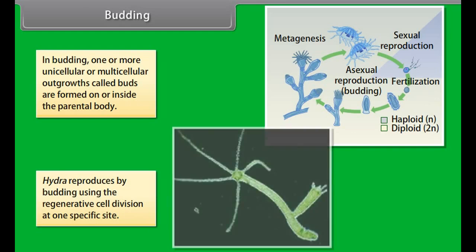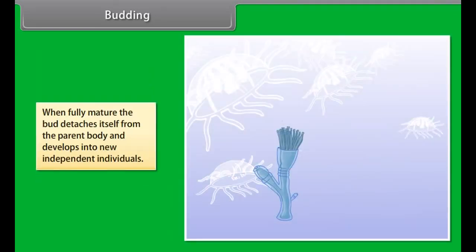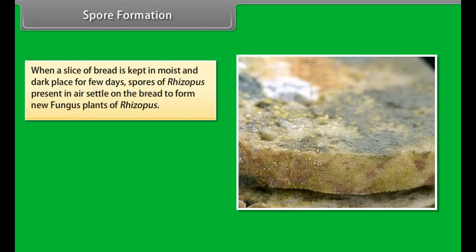In budding, one or more unicellular or multicellular outgrowths called buds are formed on or inside the parental body. Hydra reproduces by budding using regenerative cell division at one specific site. When fully mature, the bud detaches itself from the parent body and develops into a new independent individual.